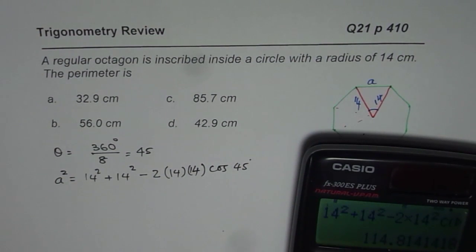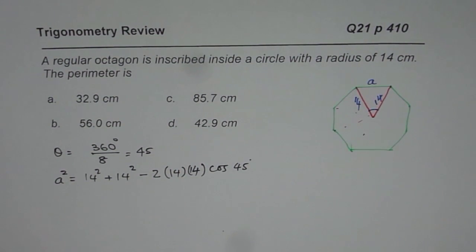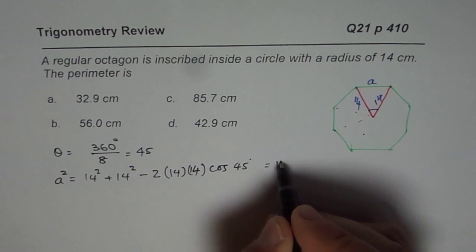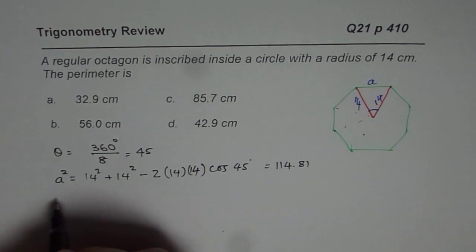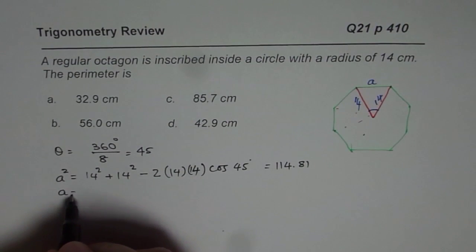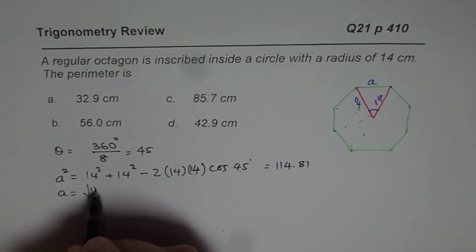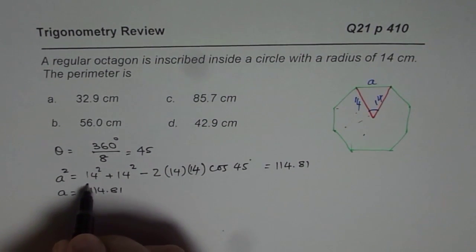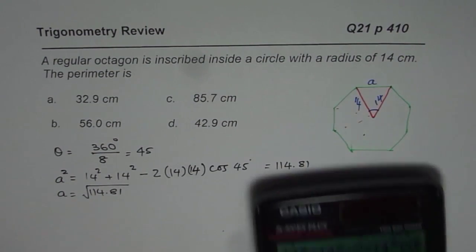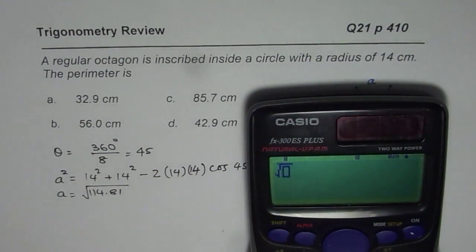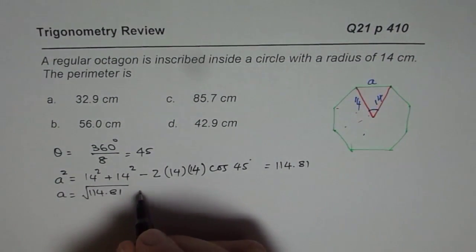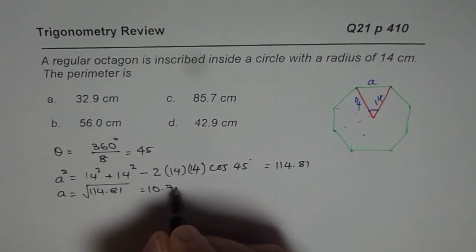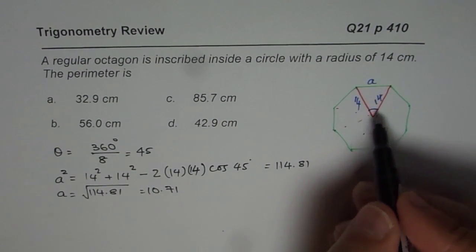That equals 114.81. Now we can take the square root of this to get A. So A equals the square root of 114.81, which gives us 10.71. So that is reasonable — 10.71 is less than 14, which makes sense.